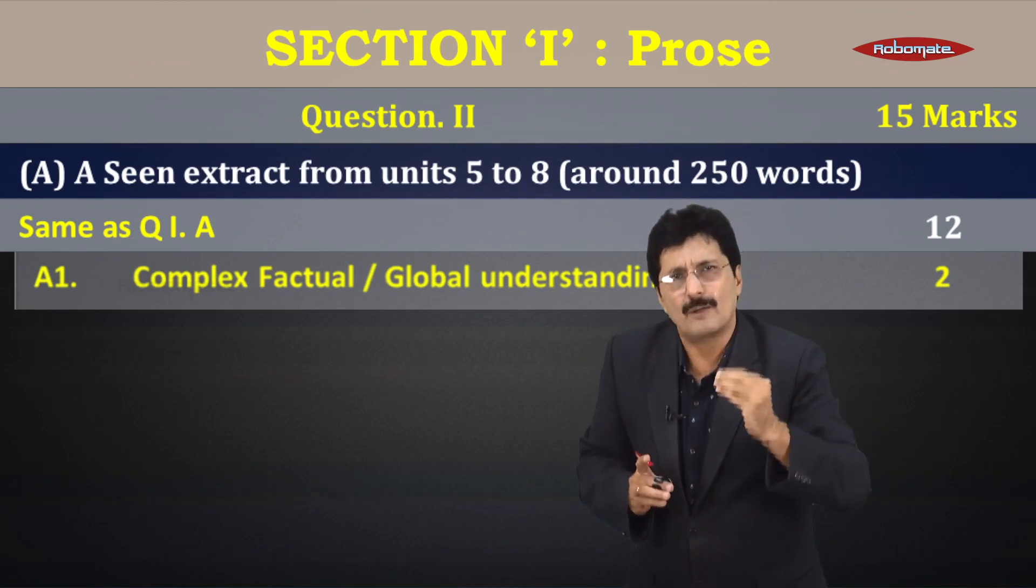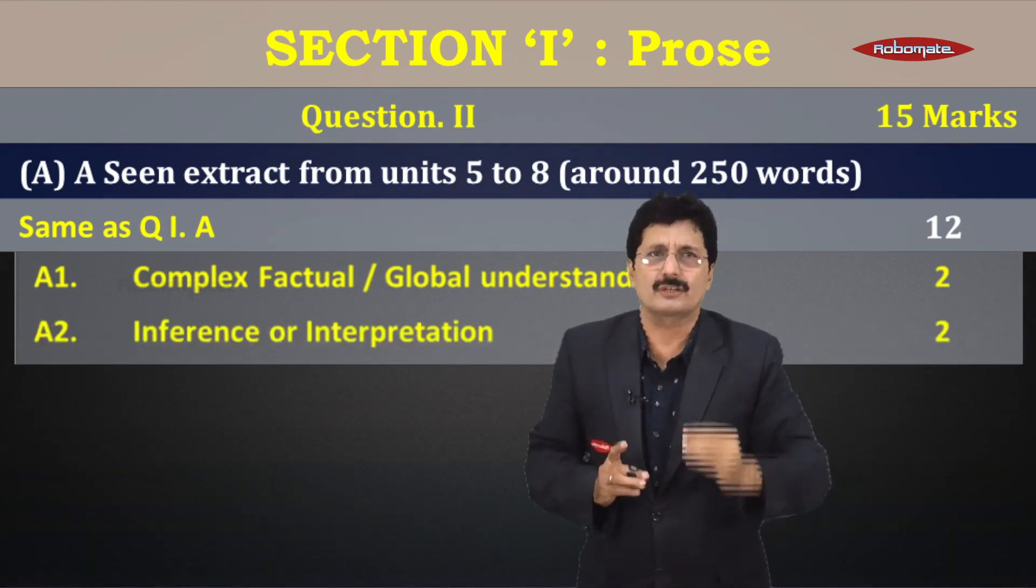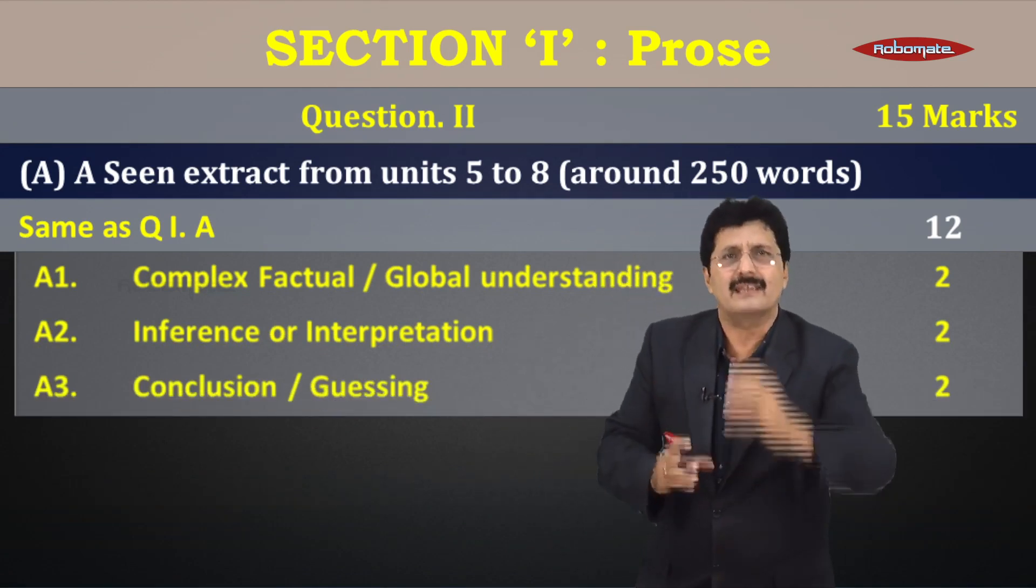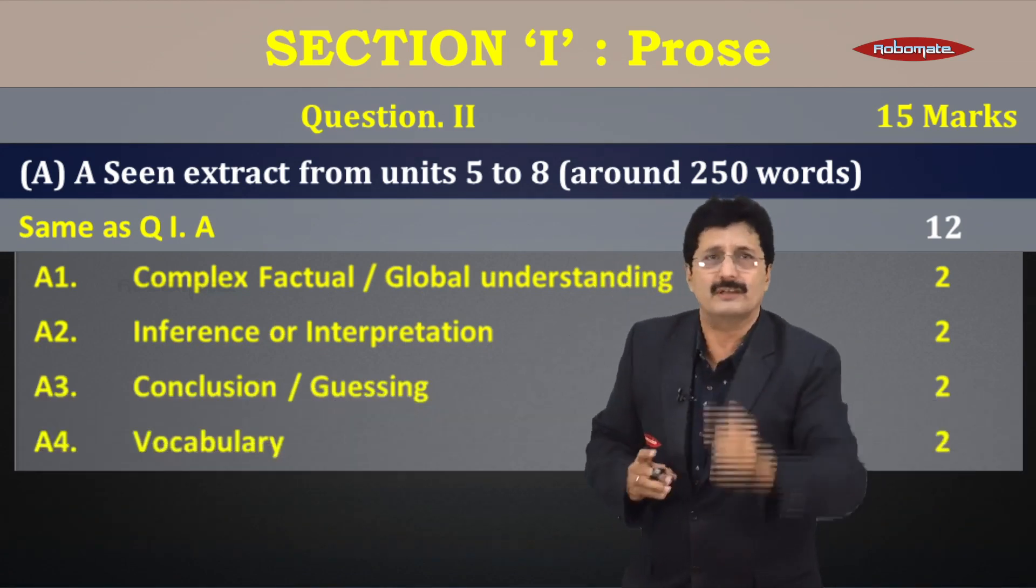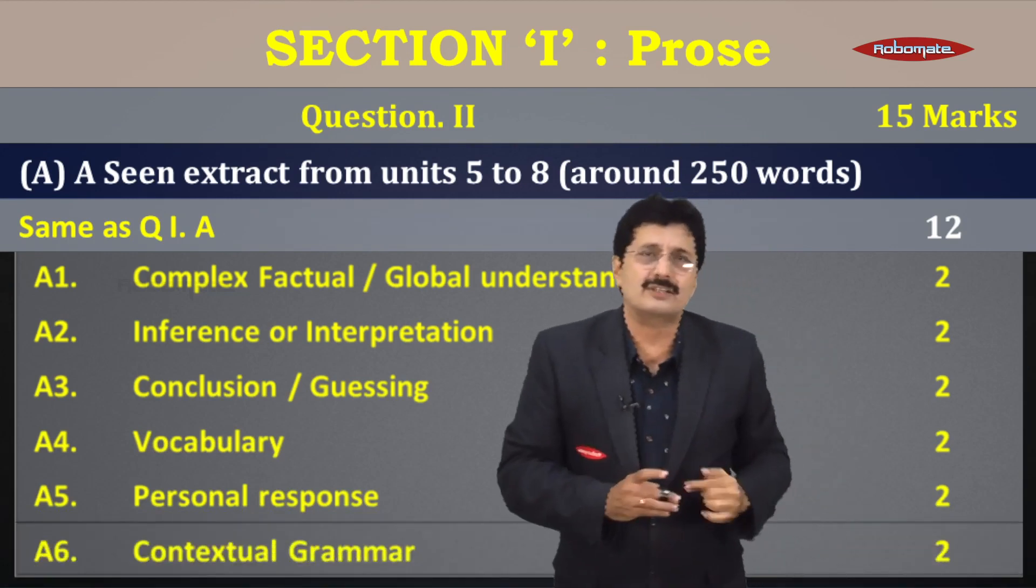A1 is complex factual global understanding, A2 inference interpretation, A3 conclusion guessing, A4 vocabulary question, A5 the personal response question, and A6 the contextual grammar question. Again, two marks each, all twelve marks.